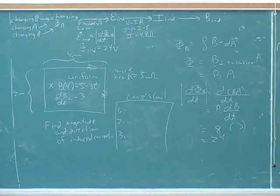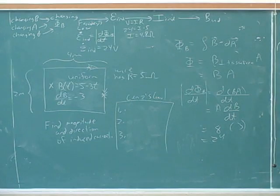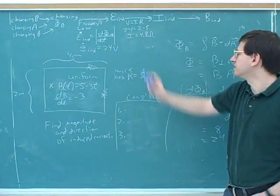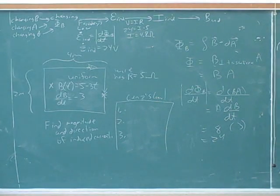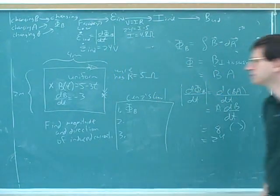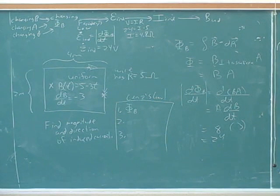Good. And then to find the direction, so we want to use our Lenz's law. So if you need to, you can check out what it says about Lenz's law in this part of the flowchart. So what do we need to do first? We need to find out whether the flux is increasing or decreasing. Right. And I think that it's decreasing. That's right. How do we know? Because as time increases, the function of B gets more negative. That's right. That's good.